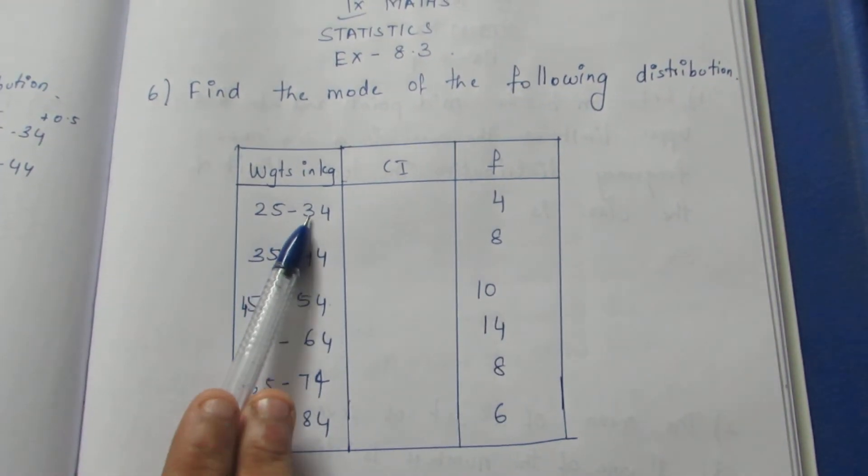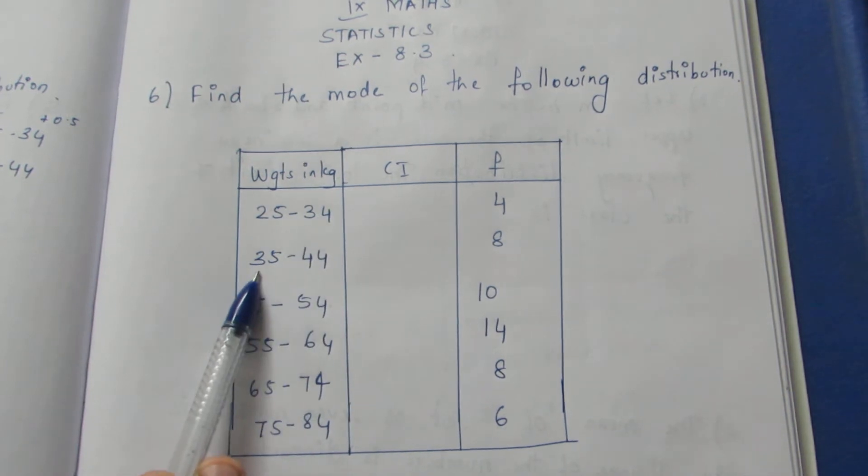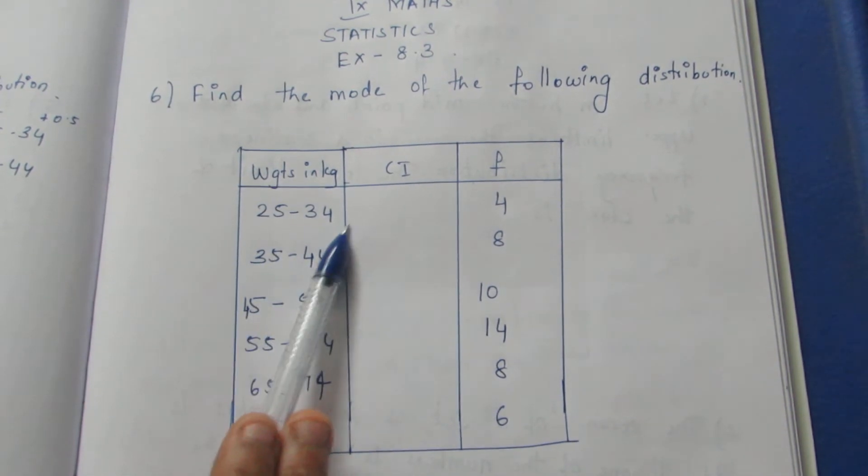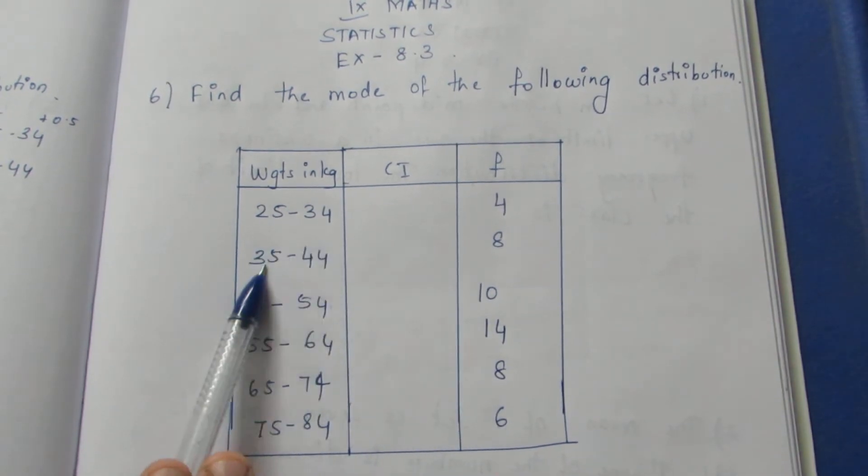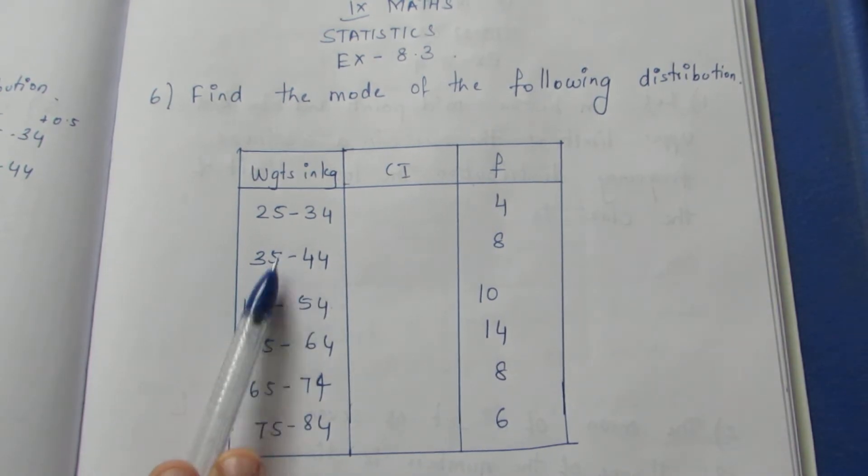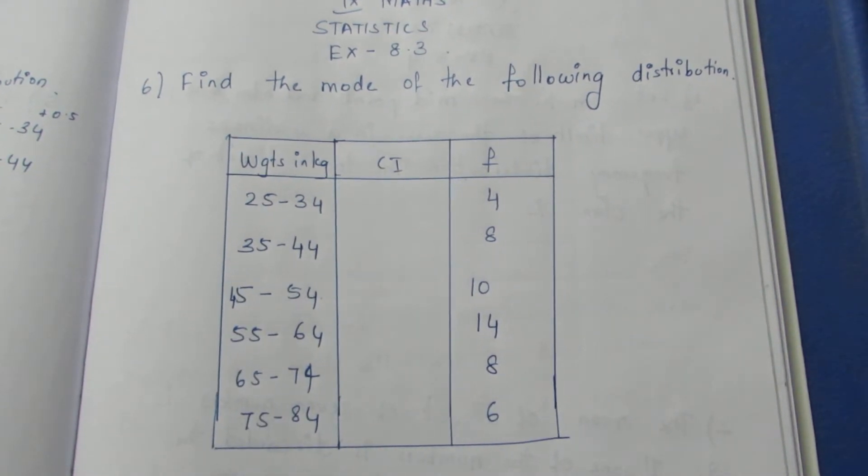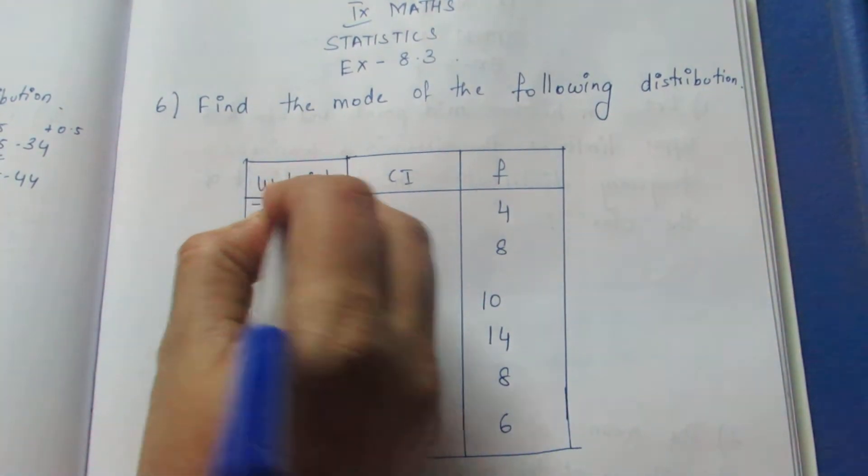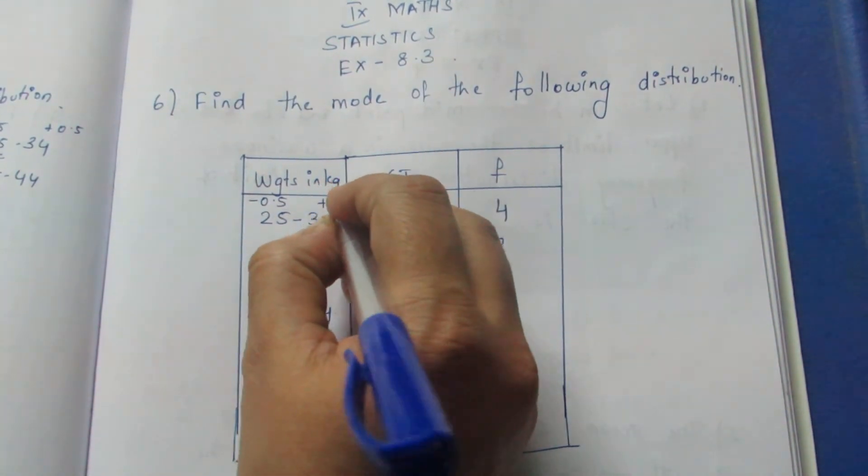But, if you look at this, this is the starting number. This is the 34, this is the continuous number. This is the 35. This is the class interval. What do you do? Left-hand side is minus 0.5. Right-hand side is plus 0.5.